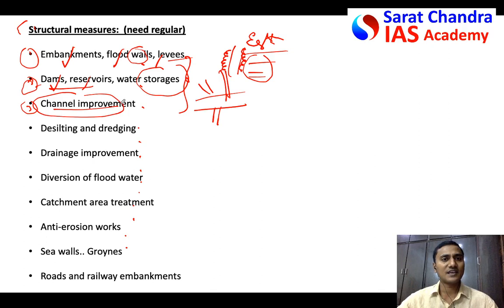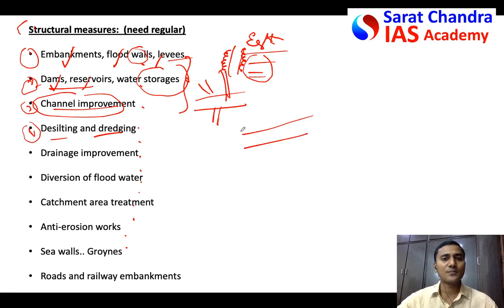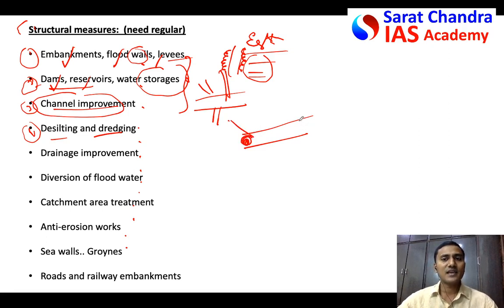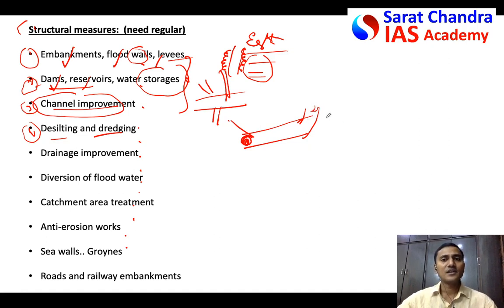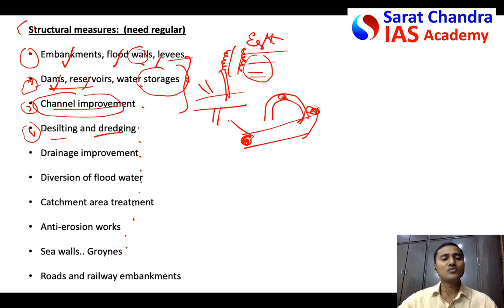Another measure is desilting and dredging of rivers. Silt accumulates particularly where water moves from hills to plains, where one river meets another causing an abrupt decrease in velocity, and at convex bends. In these places, dredging or silt removal increases the water-carrying capacity of the river.